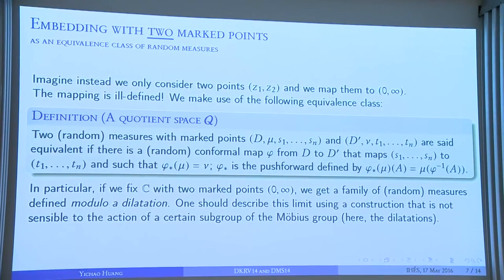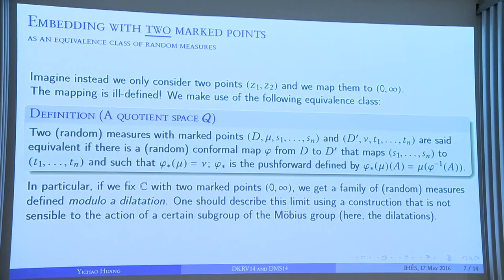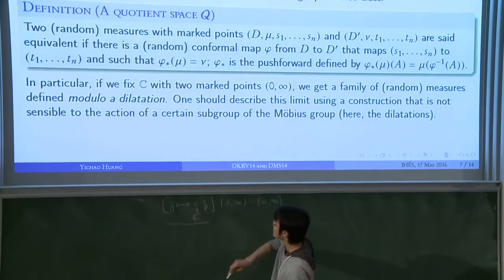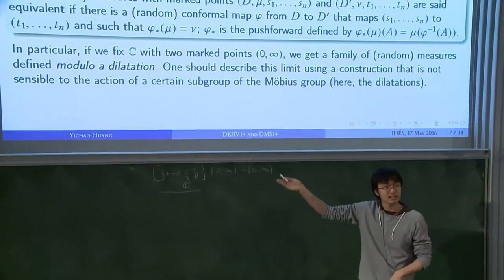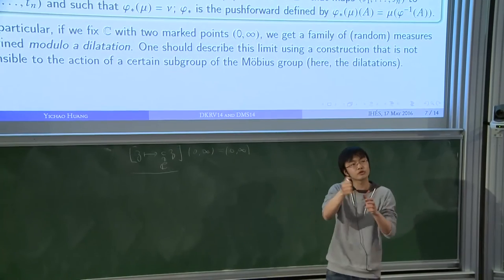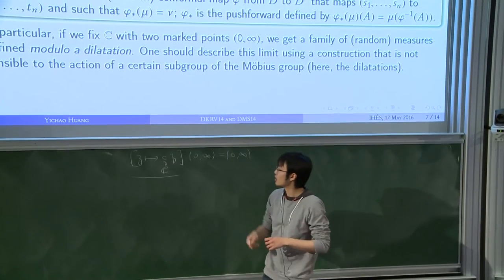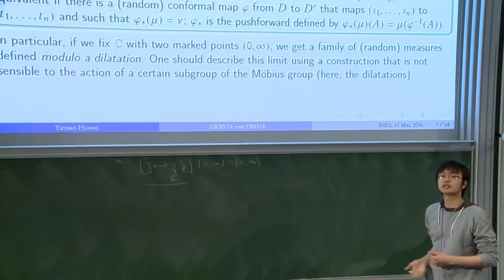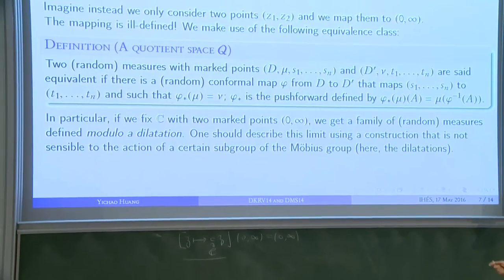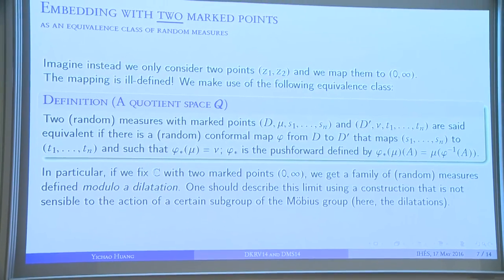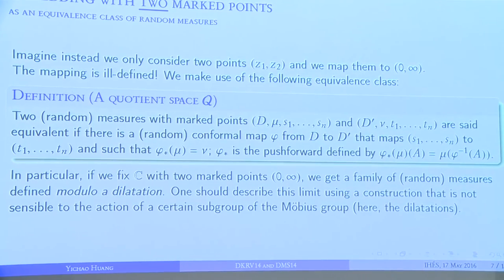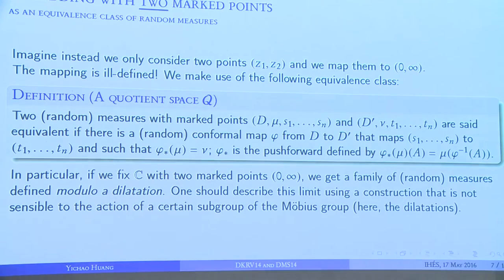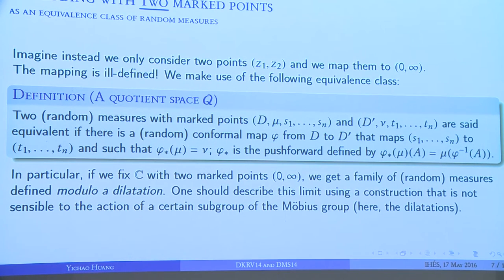So what happens if you want to fix two points? Now the embedding is not well-defined because you can actually pass from one embedding to another embedding by this map. You can push forward your measure by one of these multiplications and get another embedding.